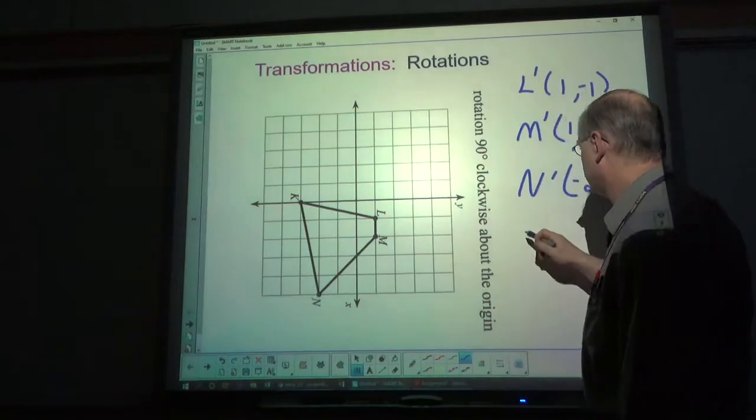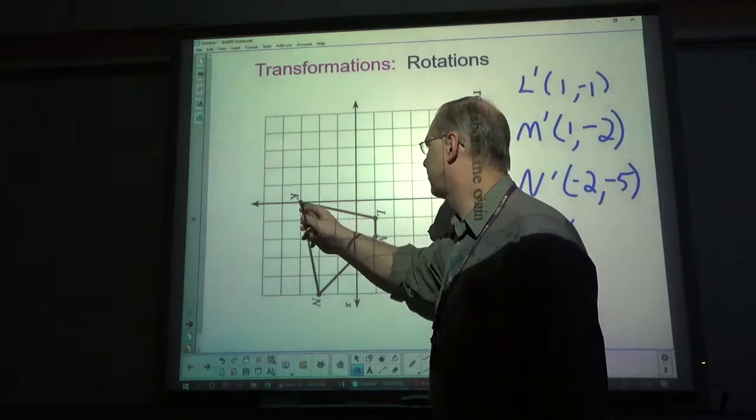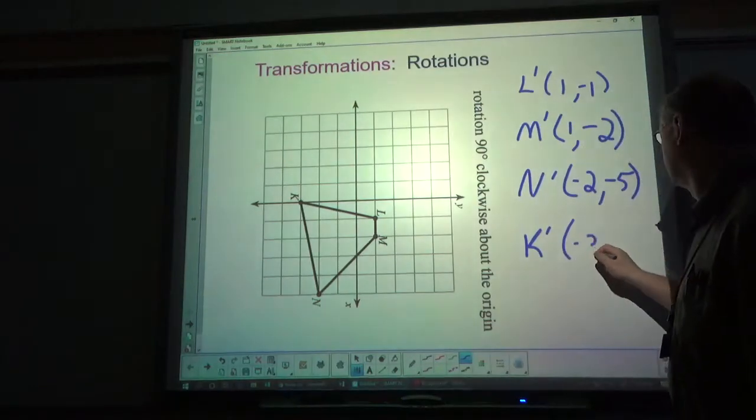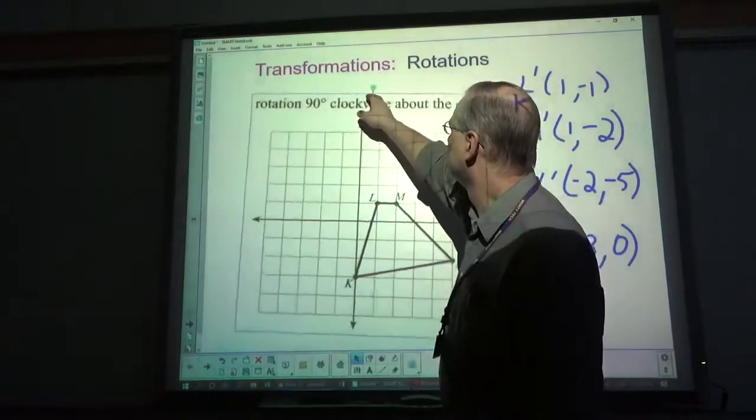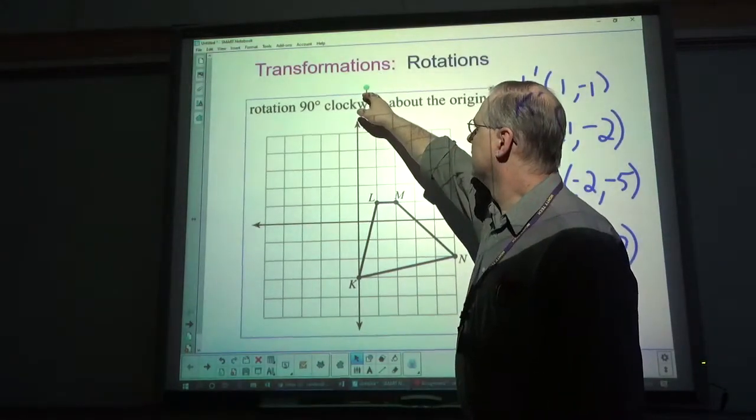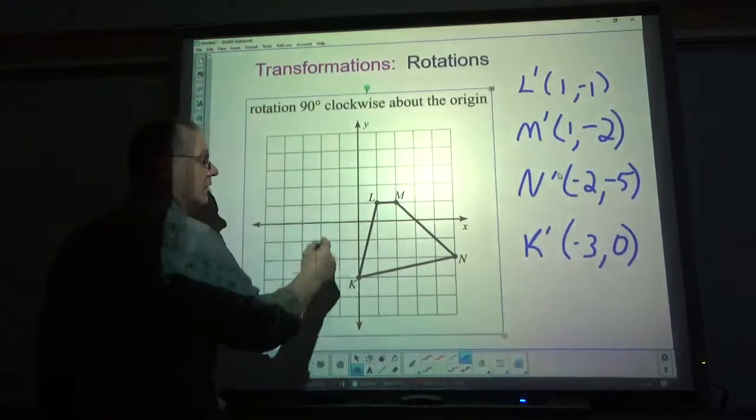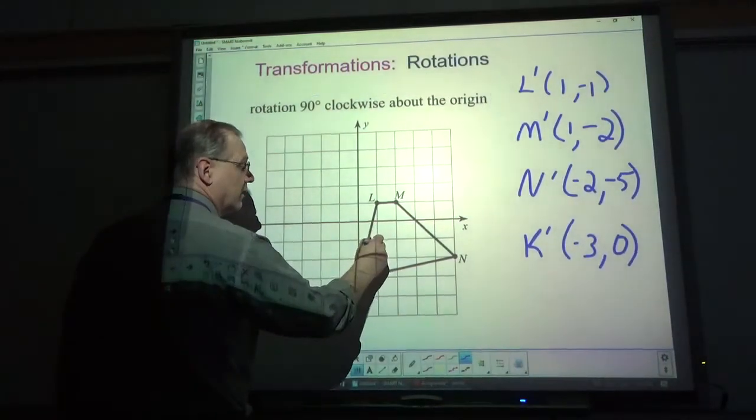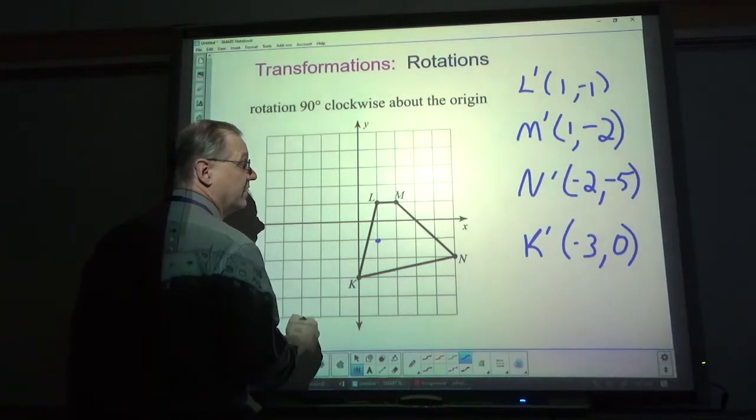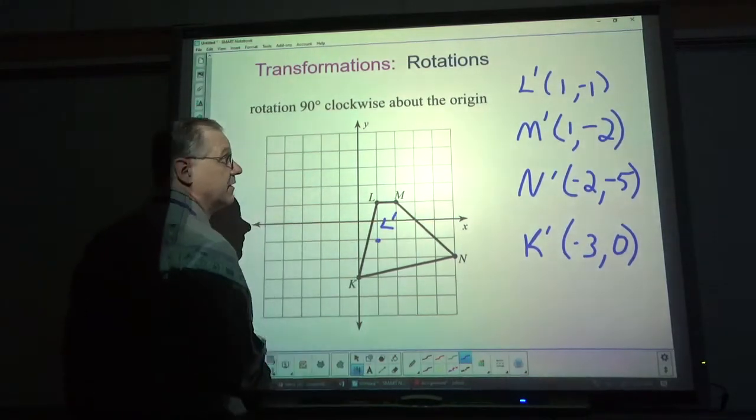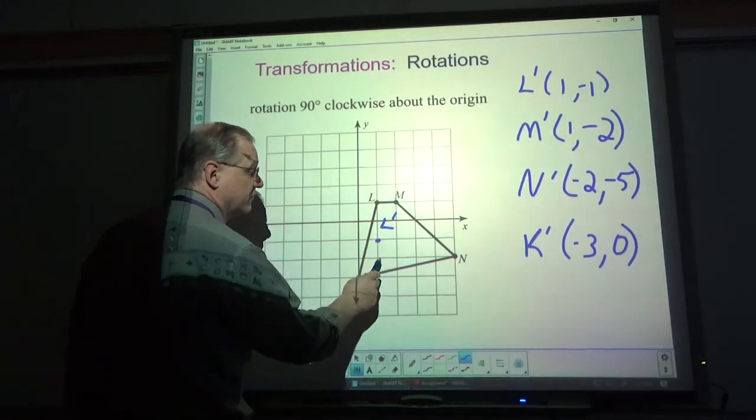And K, which I should have put at the top, ends up at negative 3, 0. Now when I turn this back and I plot these points, 1, negative 1. That was L prime. M prime is at 1, negative 2.